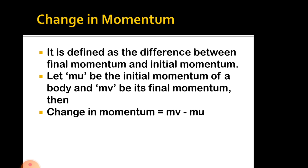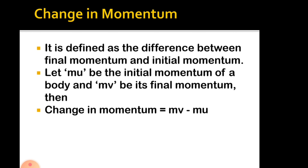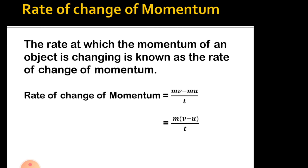Next is change in momentum. Change in momentum is defined as the difference between final momentum and initial momentum. Initial momentum is MU (mass × initial velocity U), and final momentum is MV (mass × final velocity V), since mass remains the same. So, change in momentum = MV − MU.